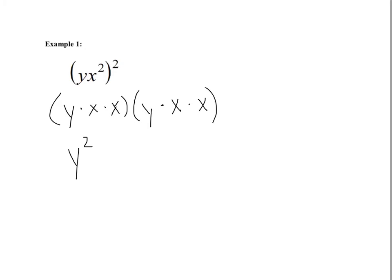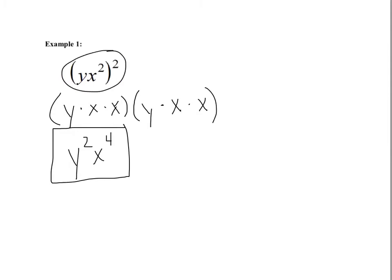Then we look at the x's, and we have 1, 2, 3, 4 x's. So we're going to have x to the fourth power. That will be our simplified version. When we simplify, we get y squared x to the fourth.